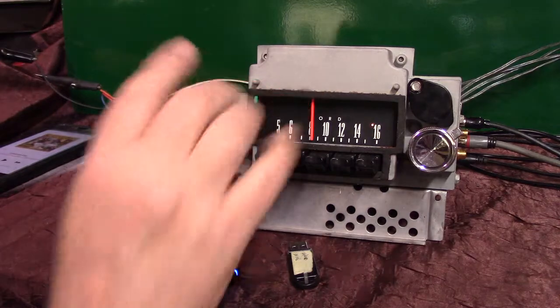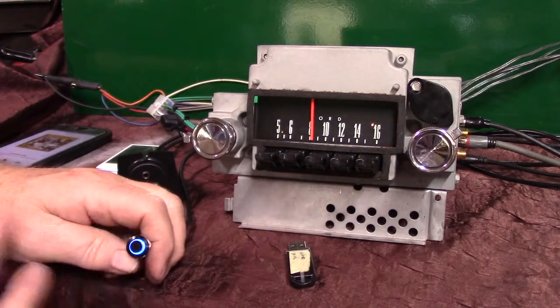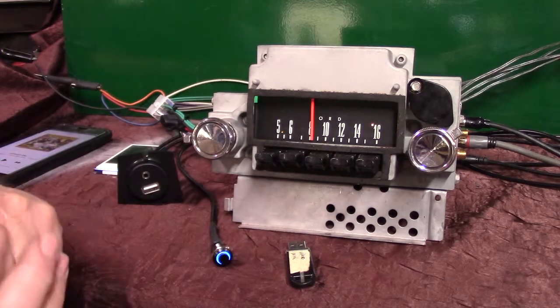Now once you do the initial pair up, every time you get in your car and have that phone with you, when you turn the radio on, she'll come on and say Bluetooth connected. That's pretty neat.